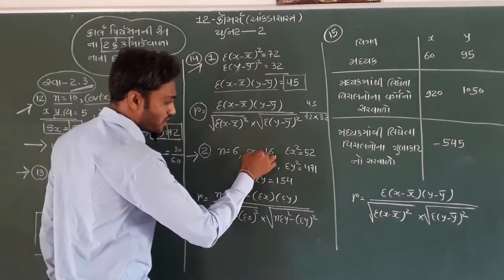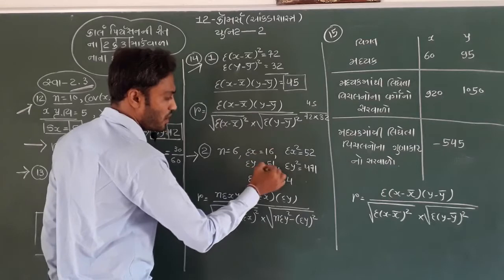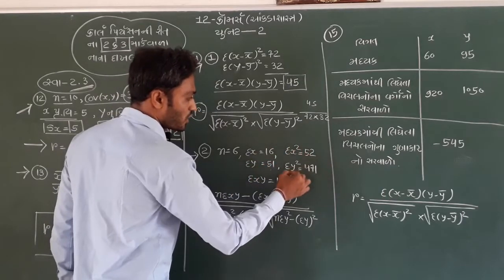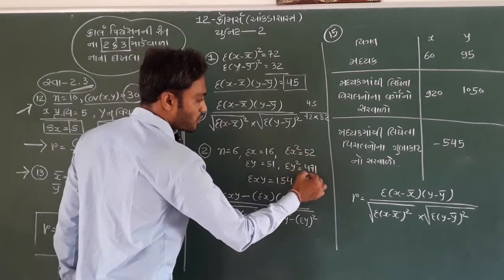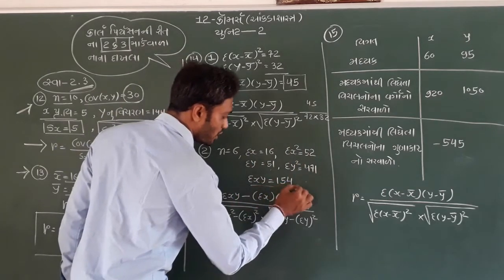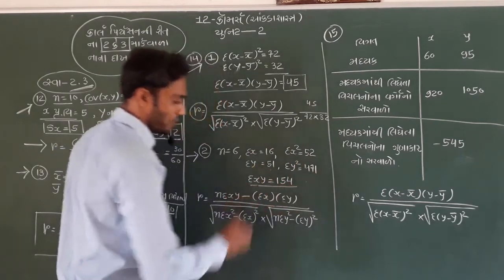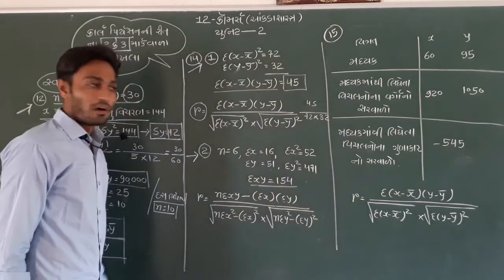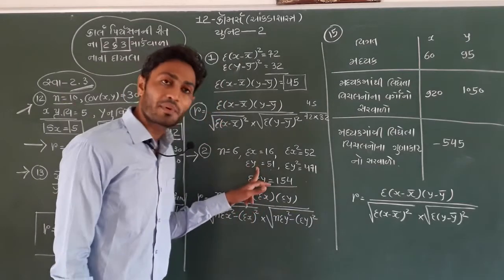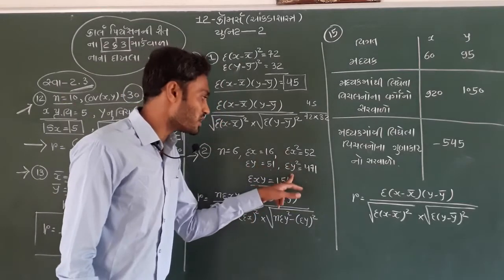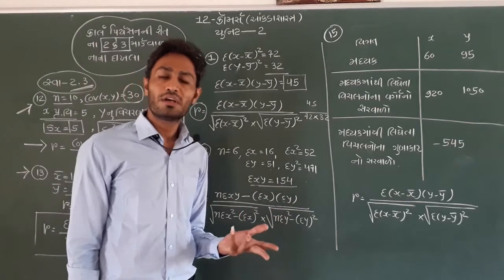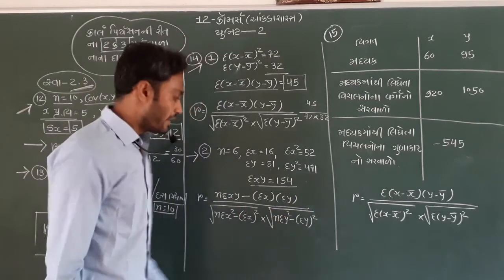Sigma x would be 10, sigma y is 51, sigma x-squared is 52, sigma y-squared is 600, sigma x-y is 150. So if you have sigma x-y and y, then you have the work. So why do you take it? It's x-y.